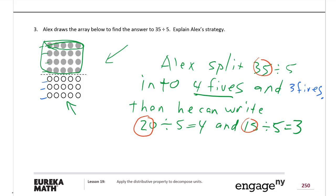So we have 4 plus 3 equals 7, meaning 35 divided by 5 equals 7.